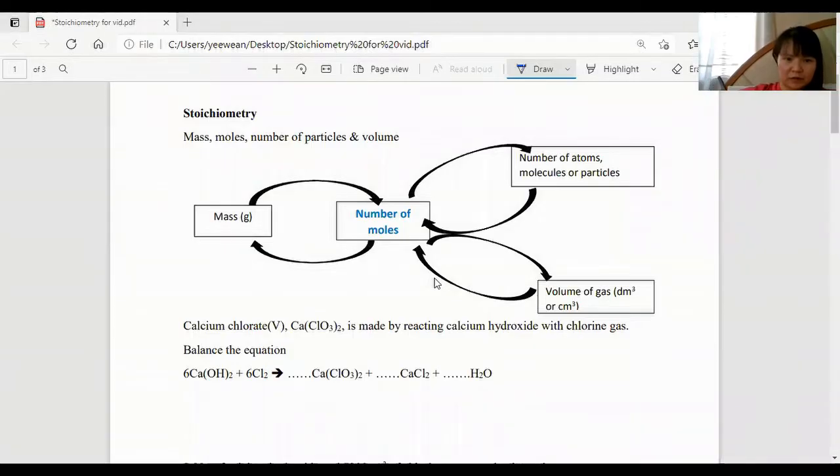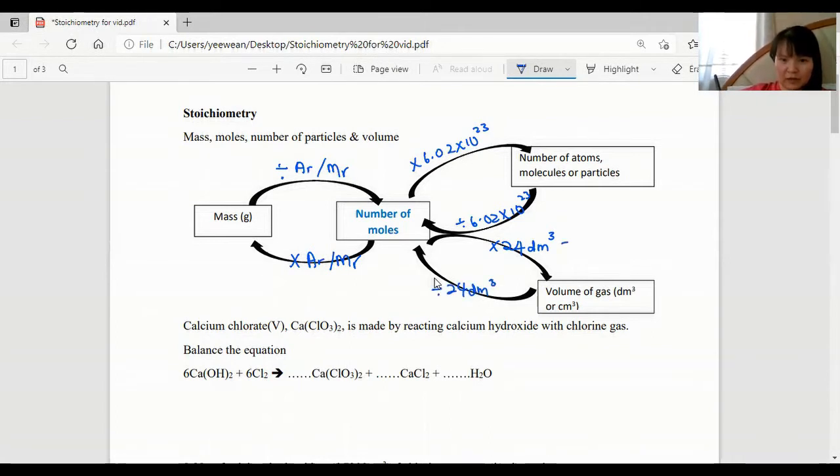To convert number of moles to mass, we multiply the AR or MR. To convert mass to number of moles, we divide the AR or MR. From number of moles to number of atoms, molecules or particles, we multiply the Avogadro constant. From number of moles to volume of gas, we multiply 24 dm cubed, which is equivalent to 24,000 centimeter cubed.